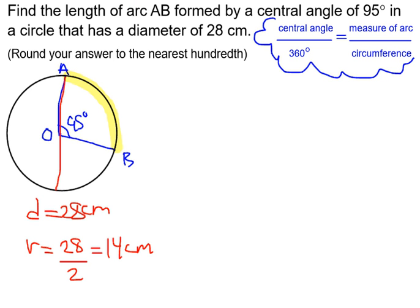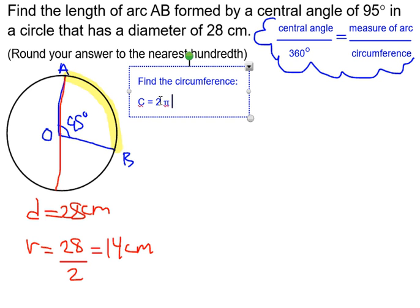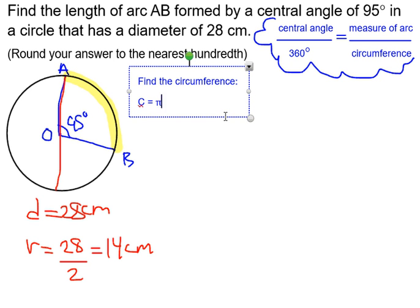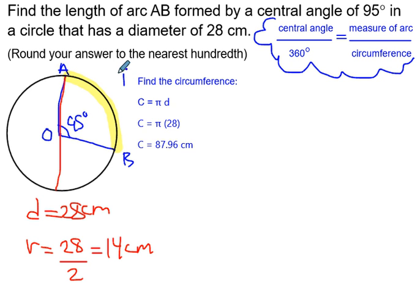What do we have in this situation? We know the central angle. We don't know the measure of the arc. We don't know the circumference, but we can find that out. Let's find the circumference. To find the circumference, C equals pi times the diameter, or 2 times pi times R. Here they give us the diameter, so C equals pi times 28, which gives us C equals 87.96 centimeters. That was step one: find the circumference.